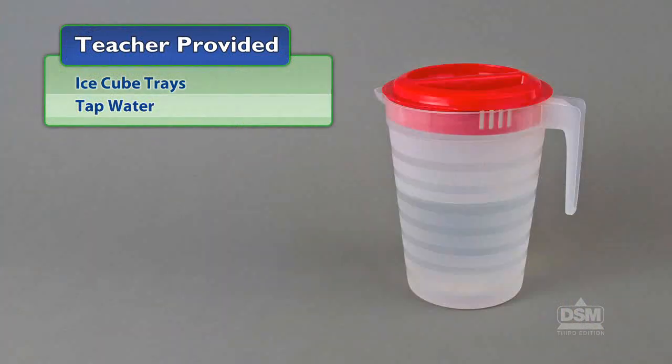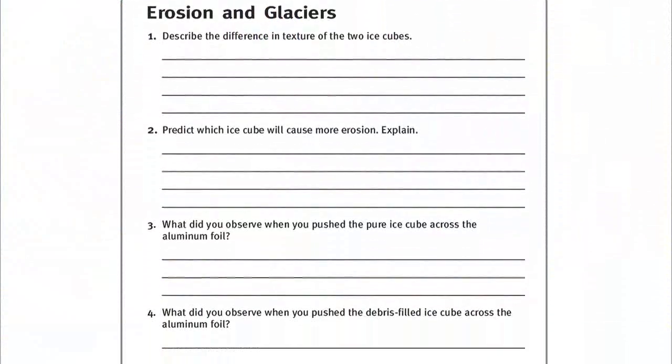You will also need to provide ice cube trays and tap water. To prepare for this activity, make a copy of Activity sheet 12 for each student.